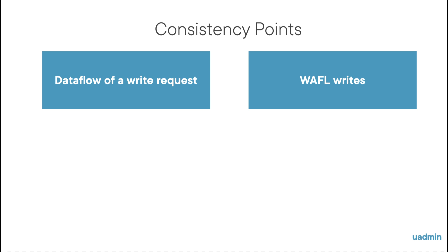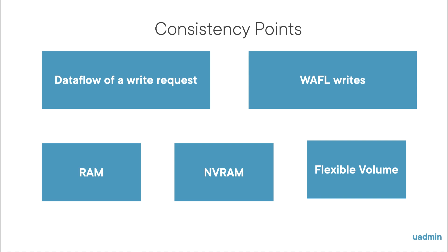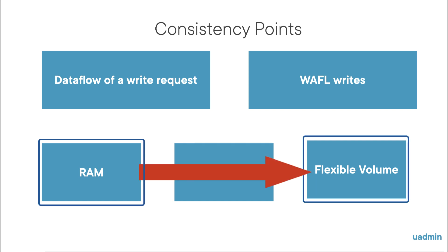There are three players that are important with regards to consistency points. First, there's random access memory. Data entering a node will be written to a buffer in RAM. Secondly, non-volatile RAM. Data that enters a node will be copied to NVRAM. And thirdly, flexible volume. The data in RAM will be written to the volume. Now how does that work? This can best be explained graphically, I think.